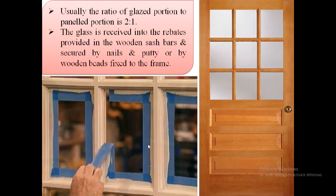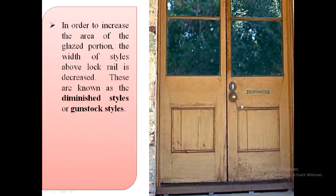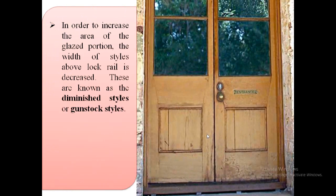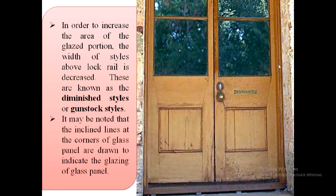The glass is received into the rebates provided in the wooden sash bars and secured by nails and putty or by wooden beads fixed to the frame. In order to increase the area of the glazed portion, the width of the stiles above the lock rail is decreased as shown in this image, and these are known as diminished stiles or gunstock stiles. The inclined lines at the corners of a glass panel are drawn to indicate the glazing.